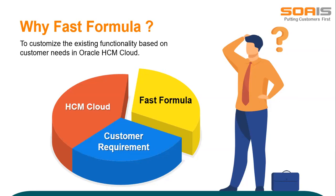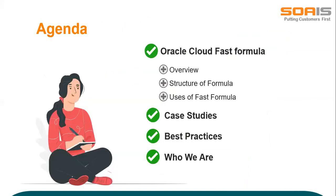Let's take payroll as an example. A particular component, say performance bonus, must be processed for some clients once in three months and for some clients once in six months. To customize such requirements, a Fast Formula can be written and attached to the payroll run so that this component will be skipped for other months and processed only when it is required. First, let us see an overview of Fast Formula and how it is structured. Then we will see some case studies, followed by best practices for Fast Formula. And last, we will see who we are and what we do.